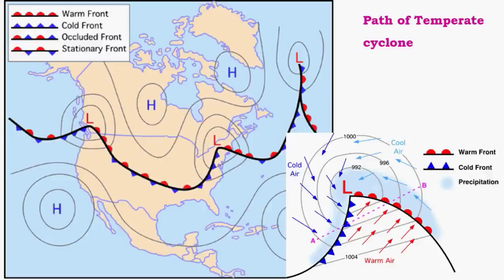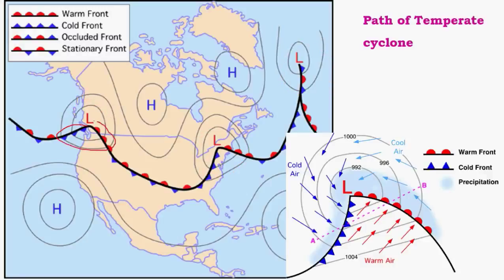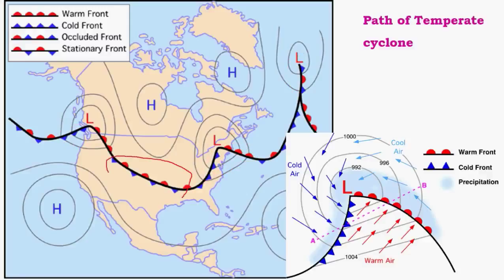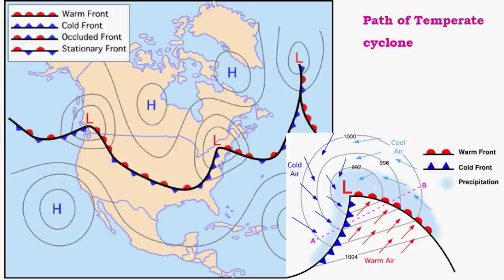Looking at the distribution map, there are three low pressure regions indicated by the symbol for occluded front. One is at a dissipating stage where the cyclone is in its final stages. The occluded front is a combination of cold and warm fronts. Stationary fronts also see significant rainfall but not as intense as the occluded front. This is how temperate cyclone behavior works.